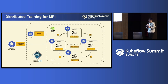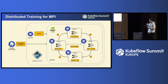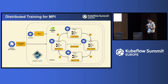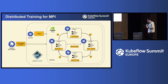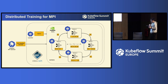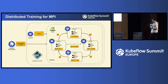MPI Operator is a standalone operator serving only MPI job v2. Once an MPI job is created, the MPI Operator creates launcher and worker pods, sets up headless services for worker pods, and after all worker pods complete initialization, the launcher pod launches training processes across all worker pods.